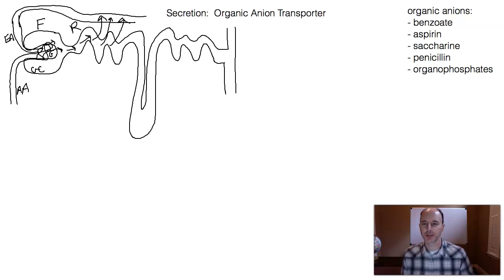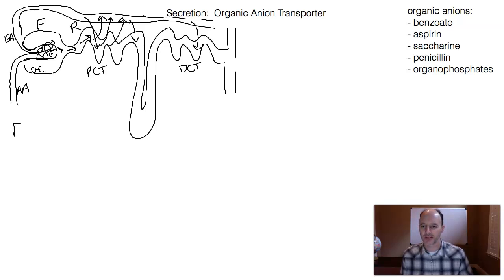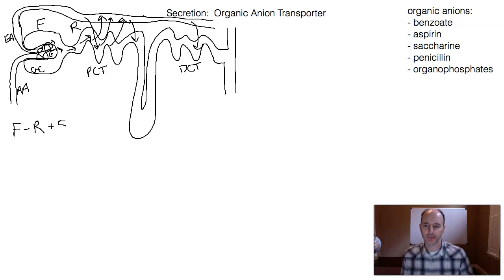We also have a mechanism of secretion, where we take molecules that are in the blood and put them into the nephron system — we secrete them. If we have a blood vessel moving along, we can secrete into various locations. Secretion can happen in the proximal convoluted tubule and also in the distal convoluted tubule. This mechanism takes molecules or ions from the blood and puts them back into the nephron system. So the equation for the nephron looks like this: filtration using blood pressure moves filtrate into the nephron system, minus reabsorption (material taken out of filtrate back into blood), plus secretion (things added back to the nephron system), and this collectively equals excretion.